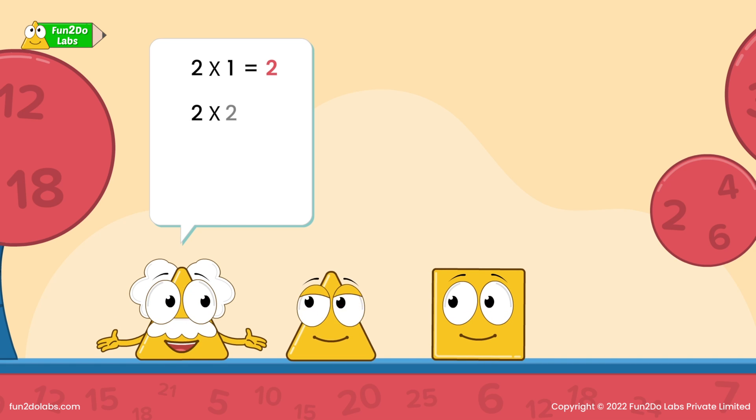When I multiply 2 with 2, the result is 4. When I multiply 2 with 3, the result is 6. So, 2, 4, 6 and so on are the multiples of 2.